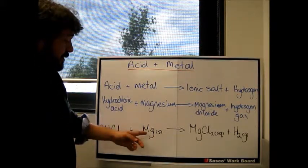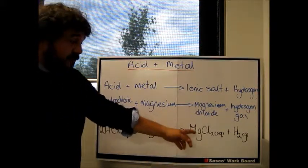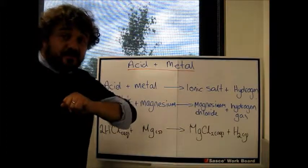So hydrochloric acid plus magnesium gives you magnesium chloride plus hydrogen gas.